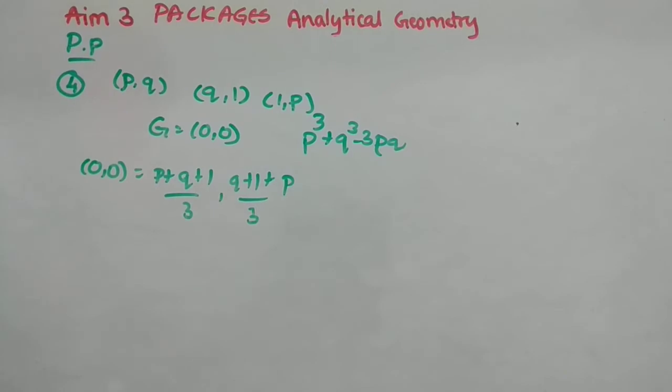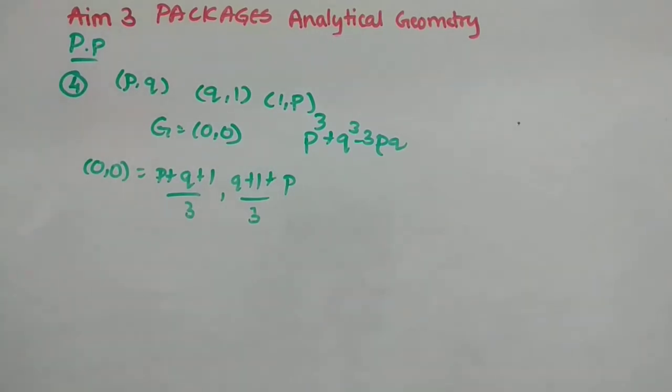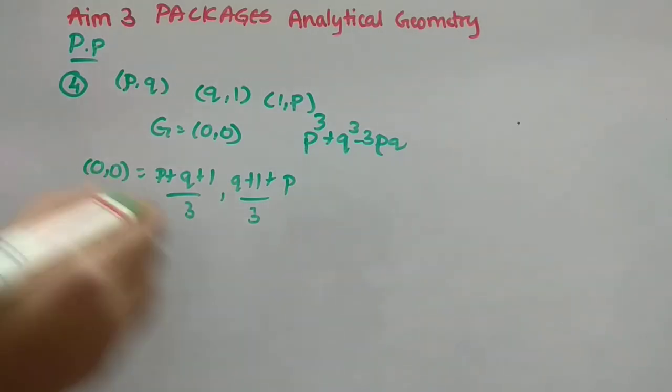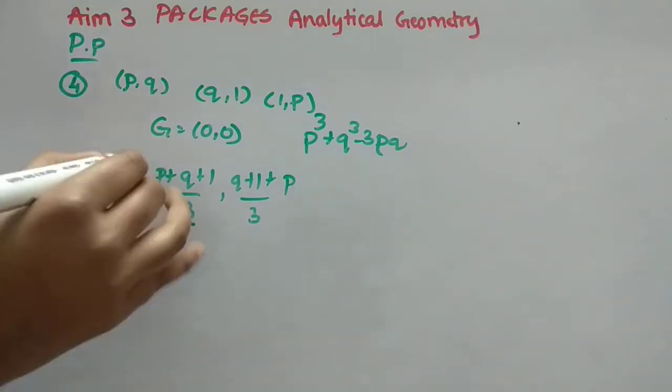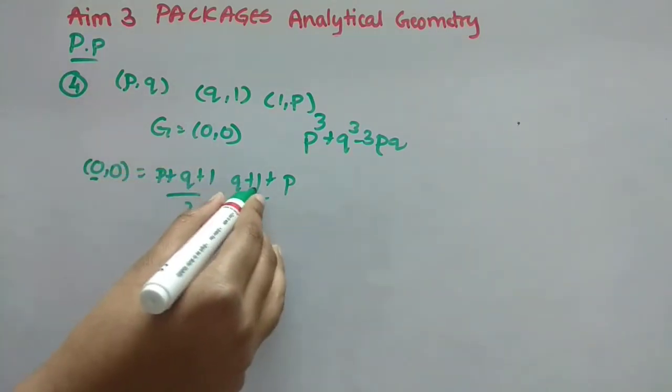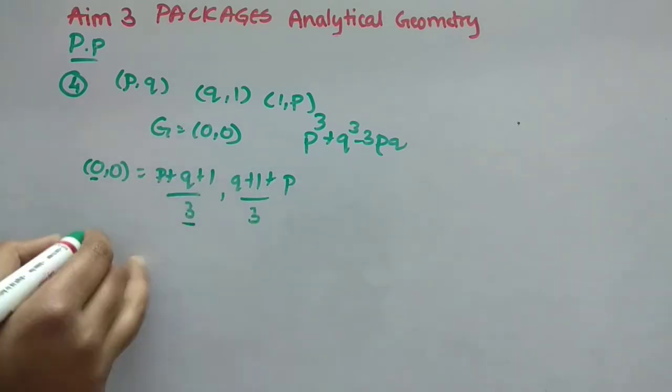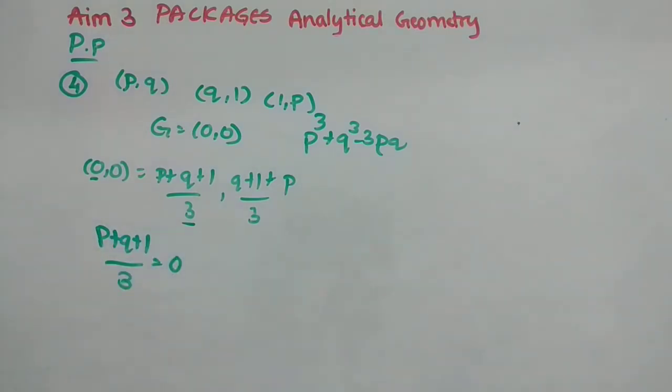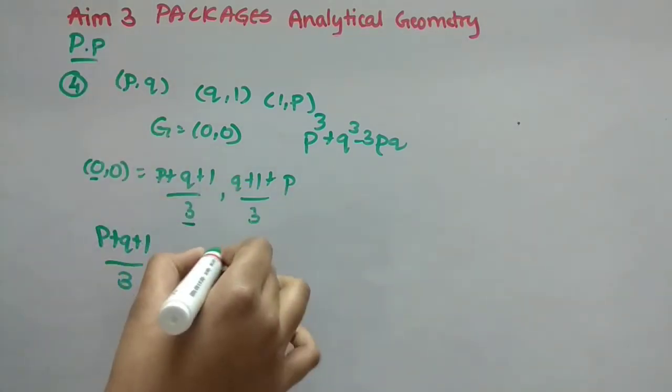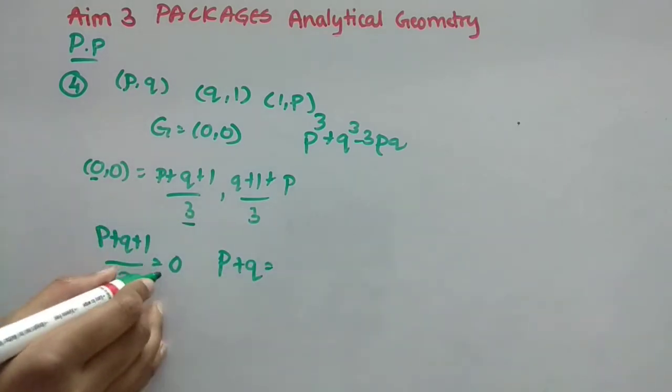So how to do that? I will say now. So first, we have used the centroid formula. That is X1 plus X2 plus X3 by 3. Let us P plus Q plus 1 by 3. Then they are also in the same way, Y1 plus Y2 plus Y3 by 3.